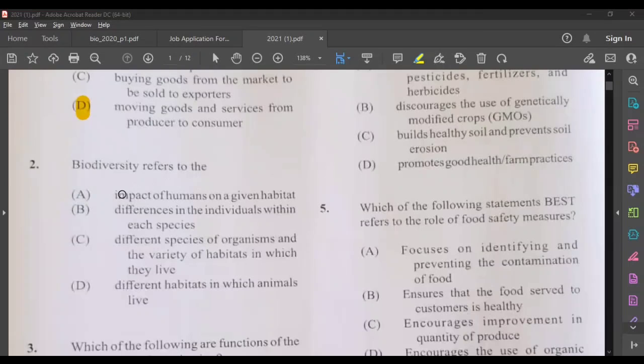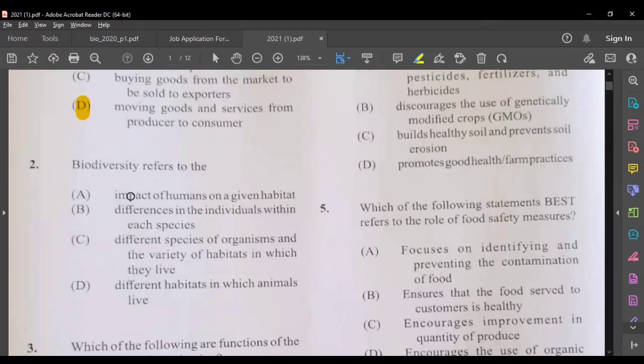Biodiversity refers to the impact of humans on a given habitat, differences in the individuals between each species, different species of organisms and the variety of habitats in which they live, or different habitats in which animals live. The best and most suitable answer would be C for this question.